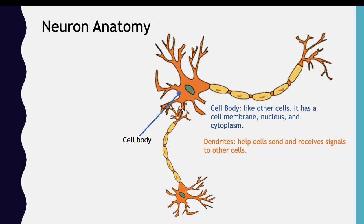The next part is the axon, and the axon is this part over here. The signal will pass through the axon all the way to the other neuron. It takes the signal received by the dendrite and passes it on to the next neuron, which will receive the signal through its dendrites.